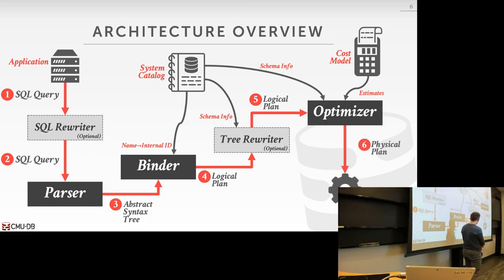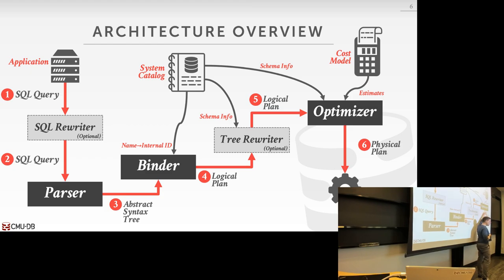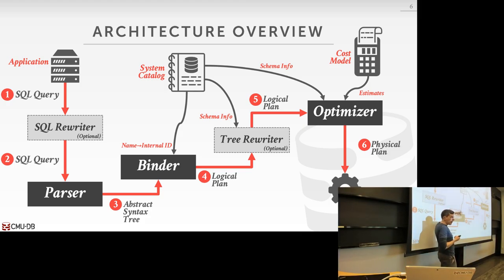Now the optimizer spits out a physical plan, which is what the data system can actually execute — hash joins, sequential scans or index scans, hash aggregation or sorting aggregation. That specification happens here. Once we get outside the optimizer, there's not really anything else to do other than execute the query plan. At a high level, this is how every single database management system implements it. The parser, binder, and optimizer are the standard pipeline.